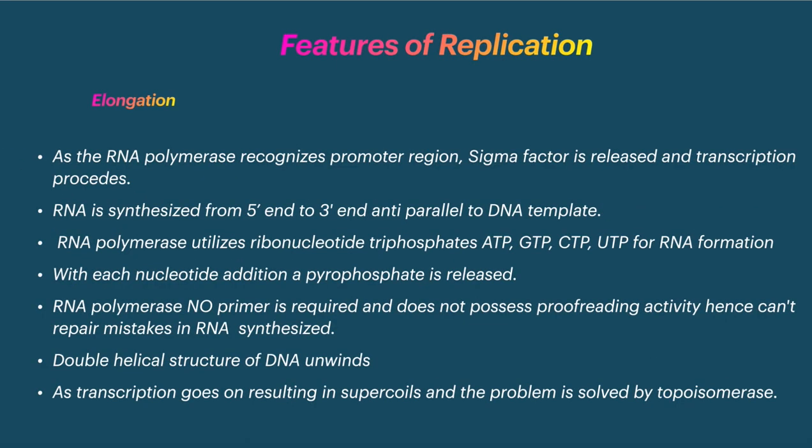Once binding occurs, the sigma factor allows RNA polymerase to recognize the promoter region. After recognition, the sigma factor is released and transcription proceeds.